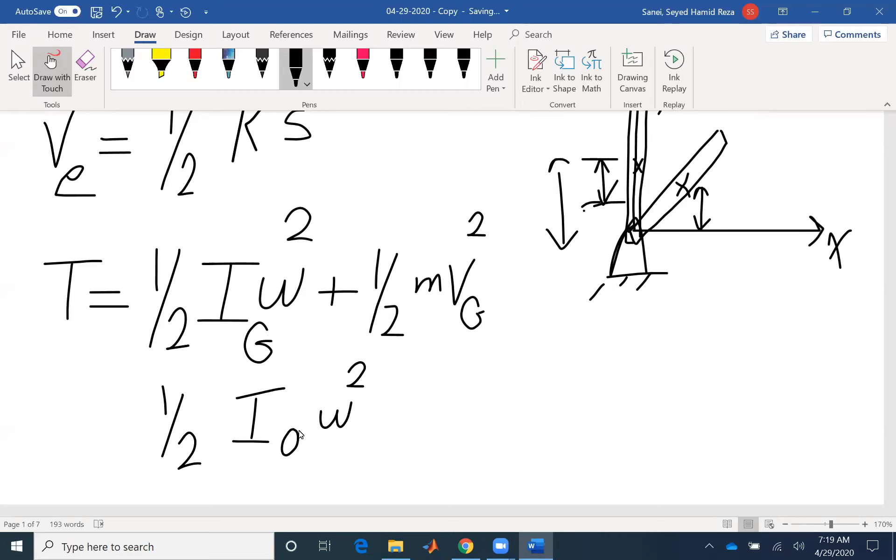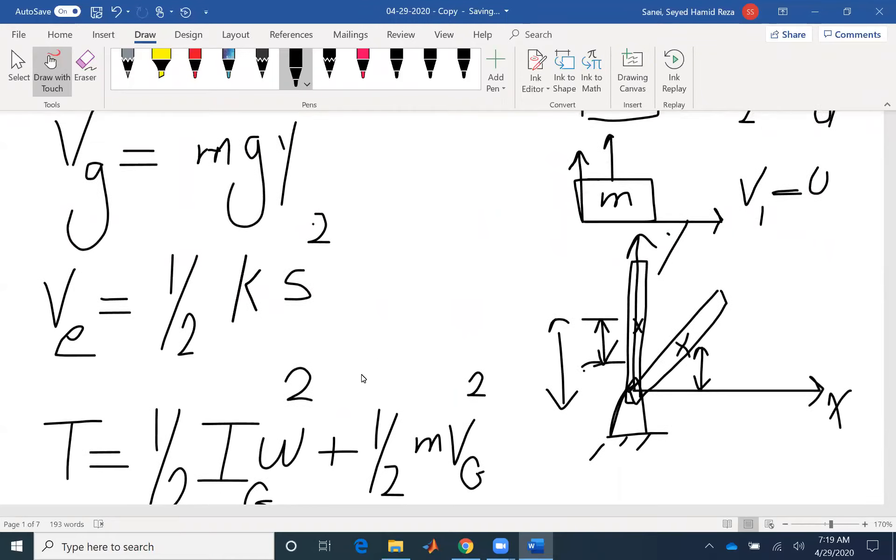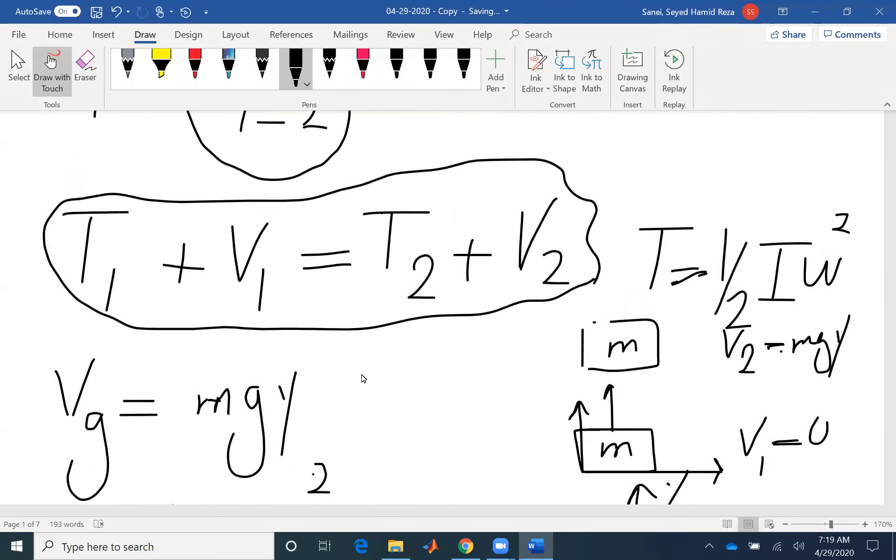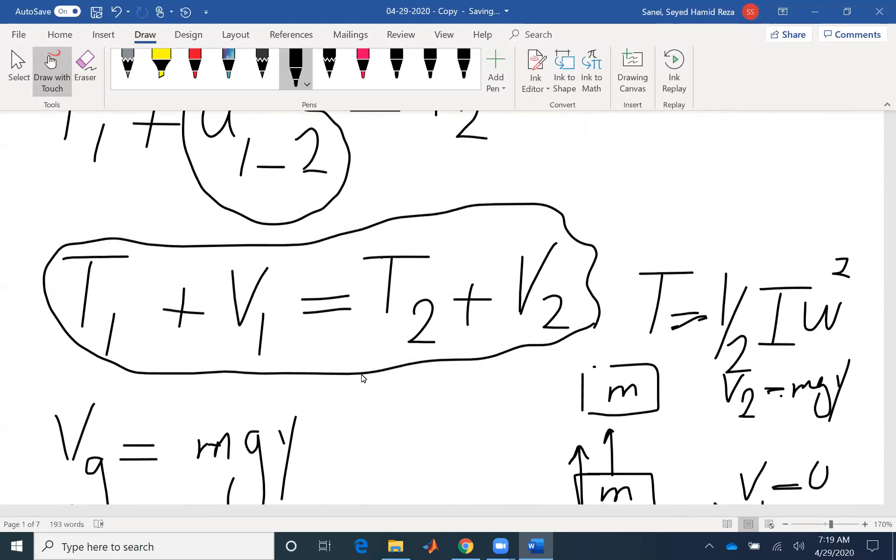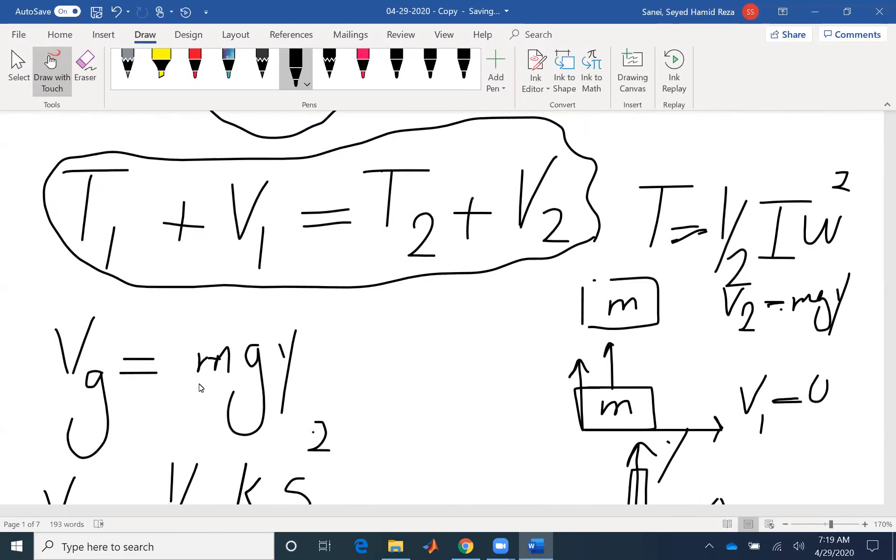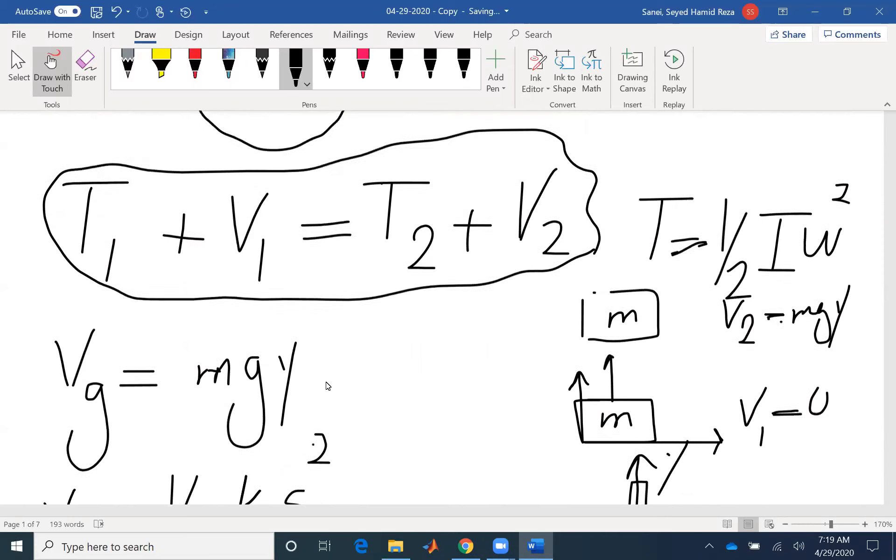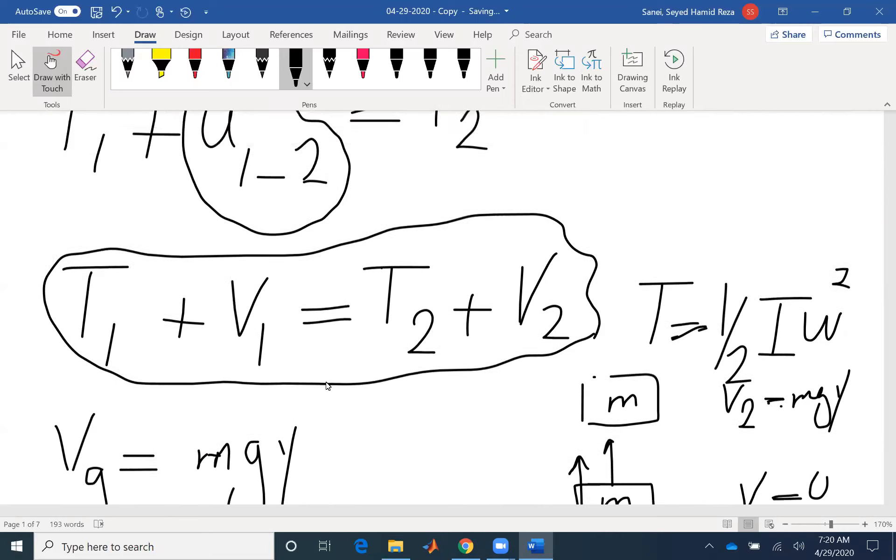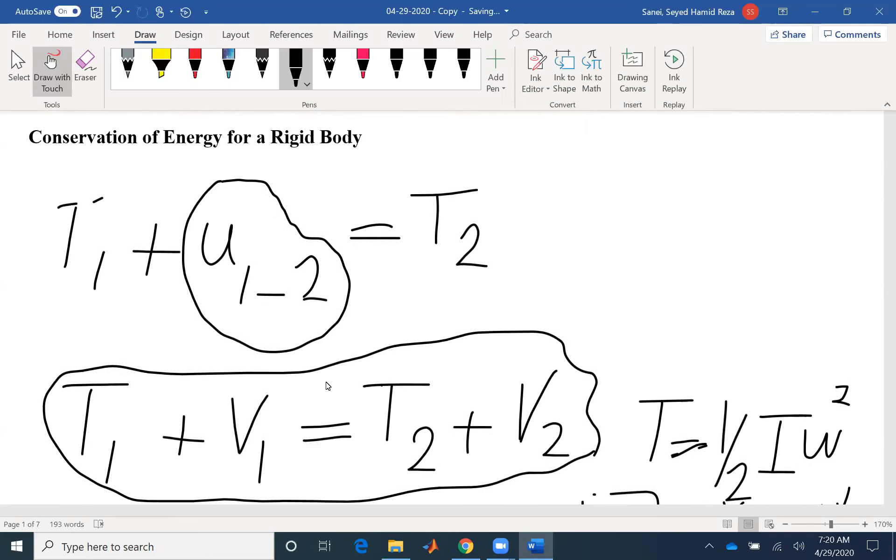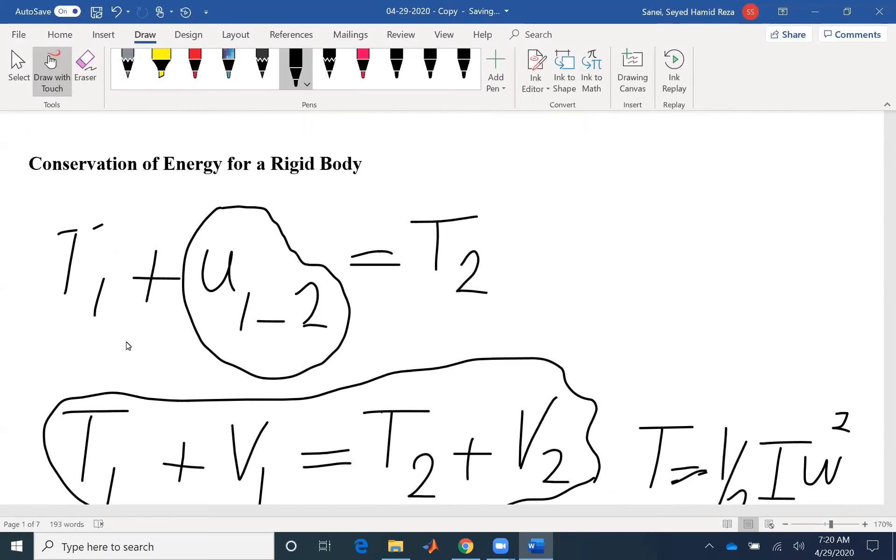One thing that we need to pay attention with conservation of energy is that we can only have two types of potential energy, the elastic and gravitational one. If you have non-conservative work such as friction or external work, you have to use the more general equation, which is the equation of kinetic energy and work.